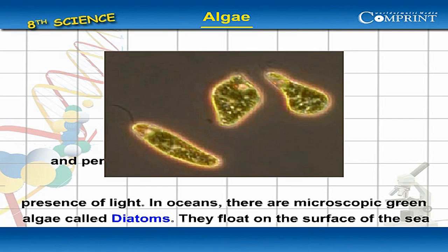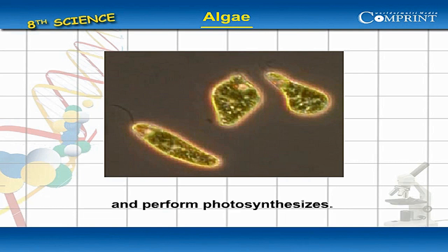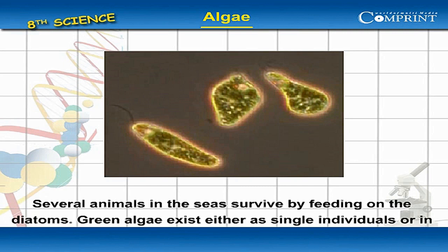there are microscopic green algae called diatoms. They float on the surface of the sea and perform photosynthesis. Several animals in the seas survive by feeding on the diatoms.